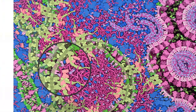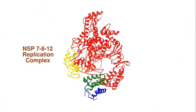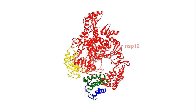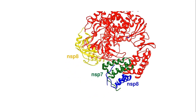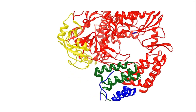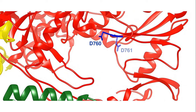The main replicase is formed by NSP12 in complex with NSP7 and NSP8. A catalytic dyad of D760 and D761 forms the active site, with light blue residues showing structural motifs that assist and guide the viral RNA to the active site.